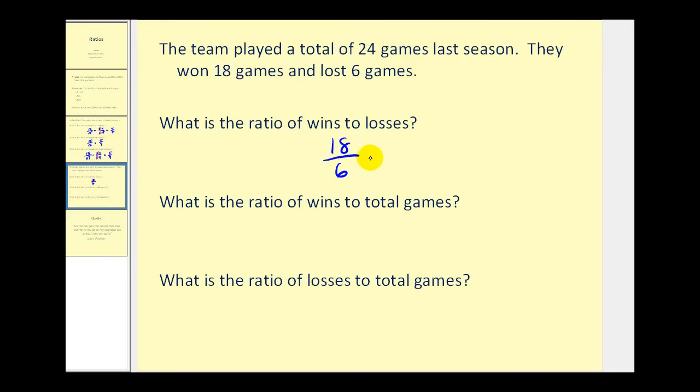Now we can simplify this. 18 is the same as 3 times 6, and we can write 6 as 1 times 6. So the greatest common factor between 18 and 6 is 6. Therefore the ratio is 3 to 1. Now it is important that we leave this as a ratio of 3 to 1 and not just write 3, because 3 by itself would not be a ratio comparing wins to losses. So even though this quotient is equal to 3, a ratio must compare two numbers.